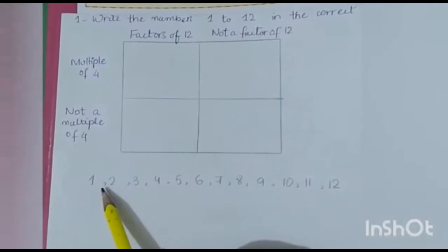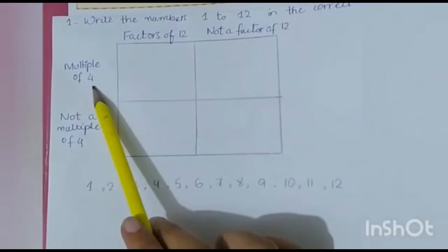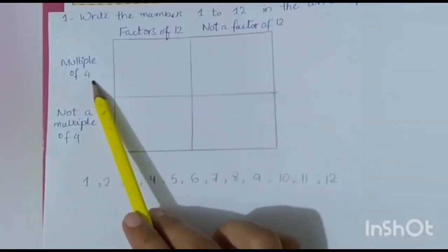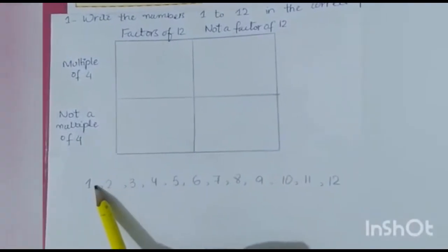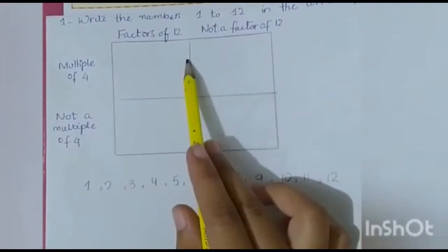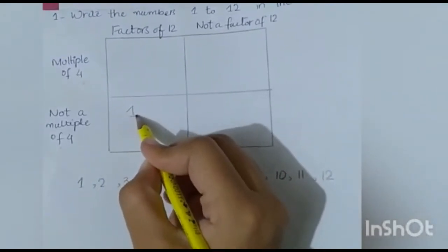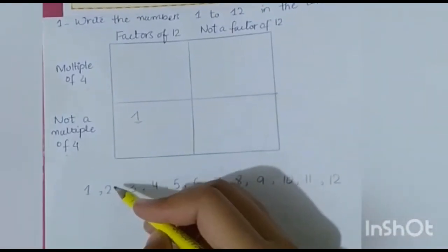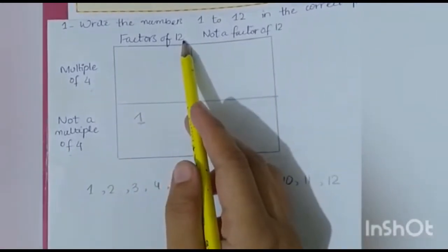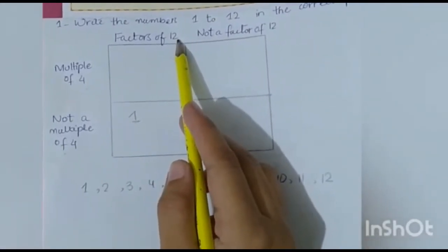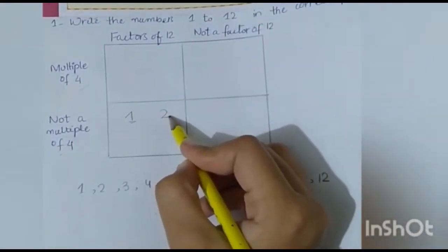First we have one. One times 4 gives 4, so one is not a multiple of 4. But 1 times 12 is 12, so one is a factor of 12. Then two — two is not a multiple of 4, but 2 times 12 gives 12, so two is a factor of 12 but not a multiple of 4.